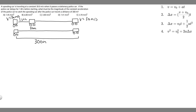In this problem, we're told a speeding car is traveling at a constant 30 meters per second when it passes a stationary police car. If the police car delays for one second before starting, what must be the magnitude of constant acceleration of the police car to catch the speeding car after the police car travels a distance of 300 meters?